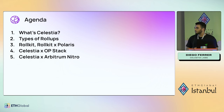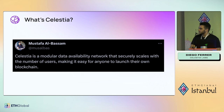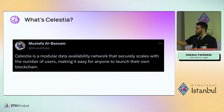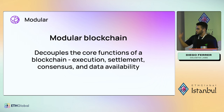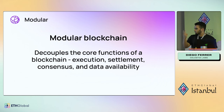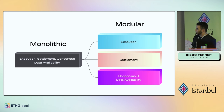One of the co-founders of Celestia, Mustafa, recently tweeted that Celestia is a modular data availability network that securely scales with the number of users, making it easy for everyone to launch their own blockchain. Let's go deeper into what each of those aspects means. Celestia is a modular blockchain because modular blockchains decouple the core functions of a blockchain: execution, settlement, consensus, and data availability.